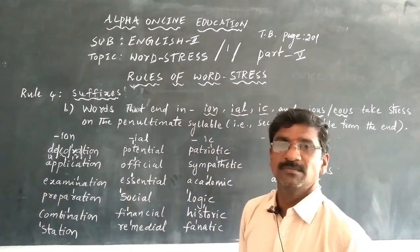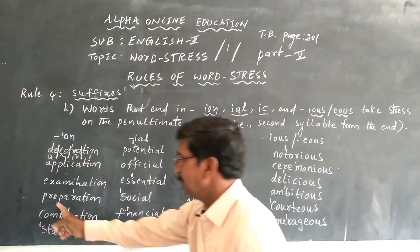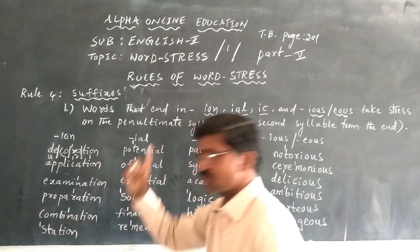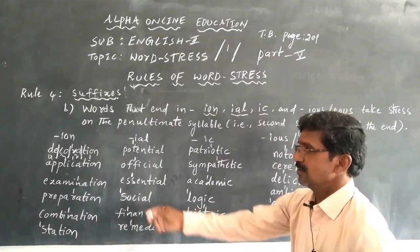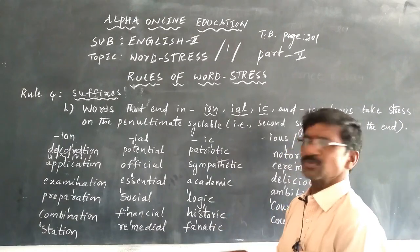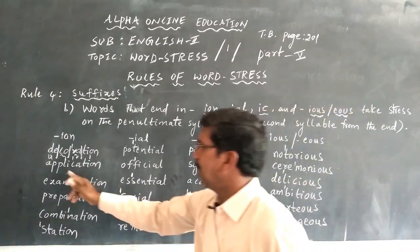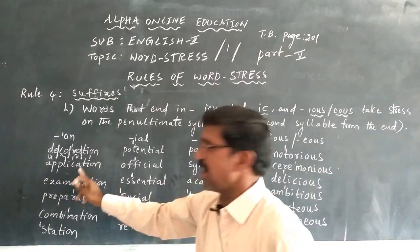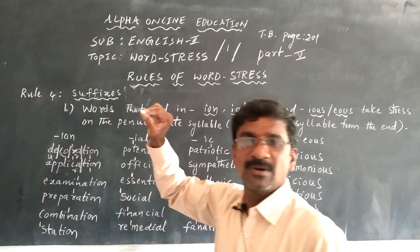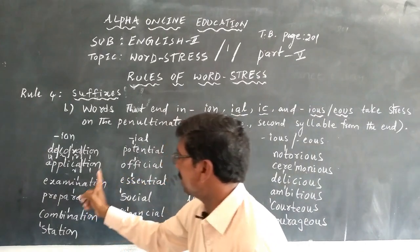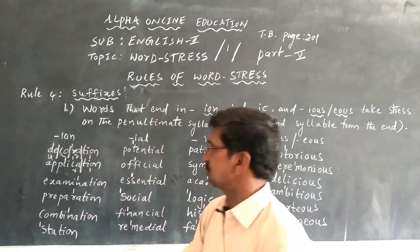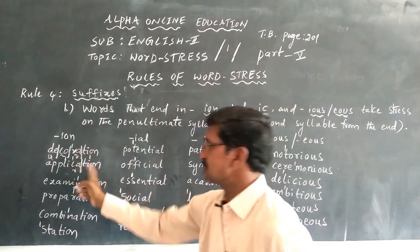Application, examination, preparation, combination, station. We pronounce the stressed syllable more forcefully. In 'application', counting from the end: shun — first syllable, k — second syllable. So the stress mark is on 'C' (the 'ca' syllable). In 'application' we have the stress mark on 'ca'.